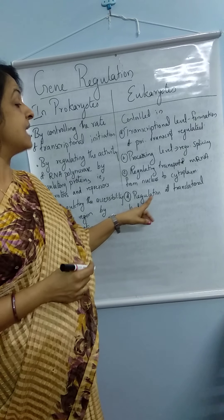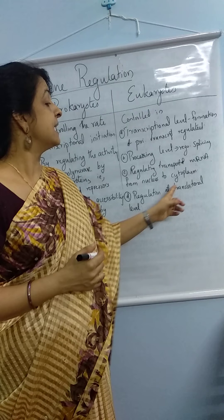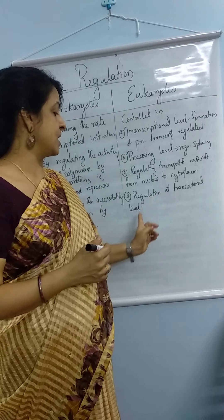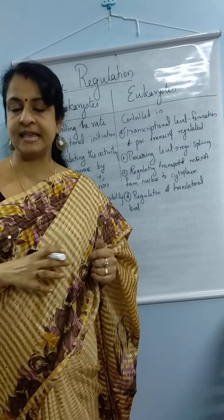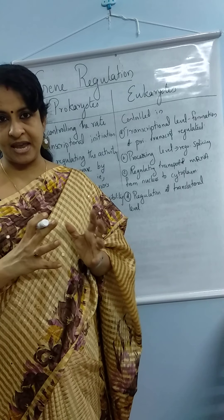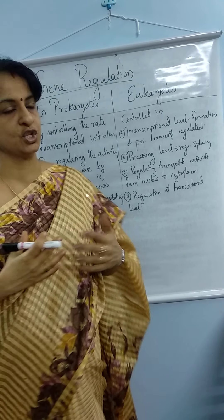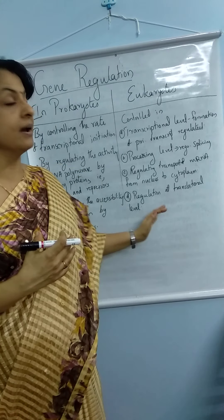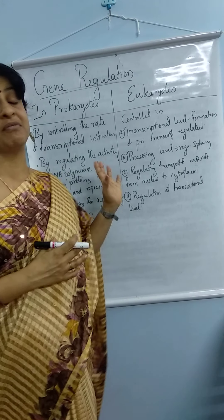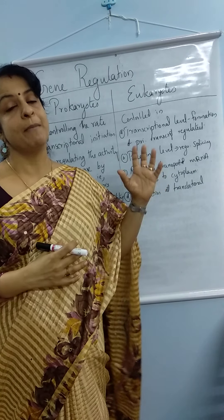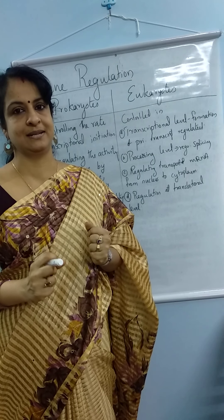The last one is regulation at the translational level. Even when mRNA reaches the cytoplasm, certain mechanisms will not allow the process of translation to occur, and so protein formation will be controlled. These are the different levels of control by which gene action is regulated in eukaryotes.